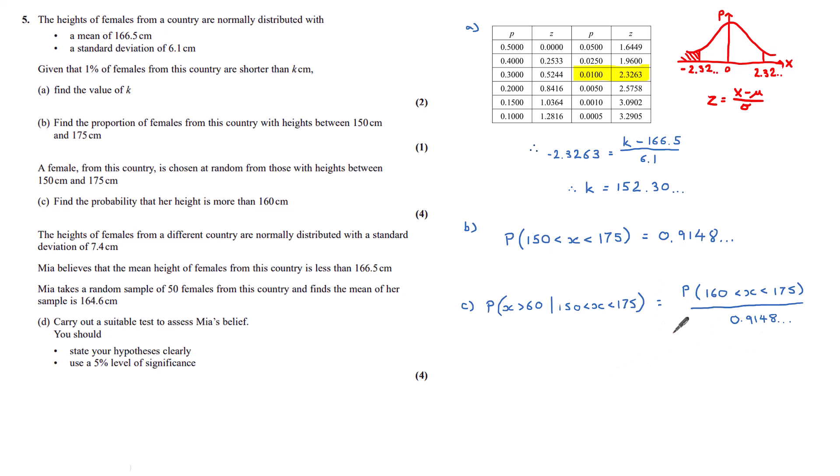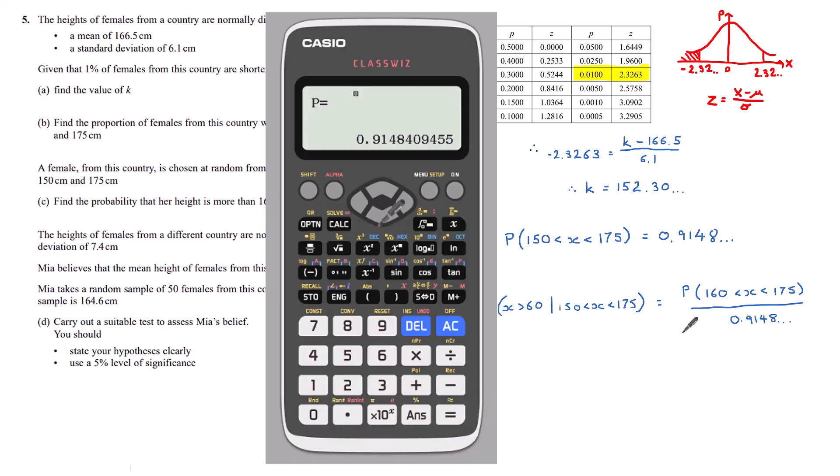This, of course, can be found on our calculator. Returning to our calculator, we know we're going to need this 0.9148, so let's just store this as A for now. And we want to find the probability between 160 and 175.